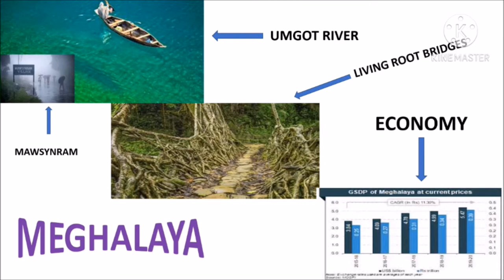Economy of Meghalaya: Turmeric produced in Meghalaya is considered to be one of the best in the world as it contains 7.5% curcumin. The state has tremendous potential for tourism. The number of tourists visiting Meghalaya increased from 8,39,363 in 2016 to 12,16,454 in 2018. Limestone production in Meghalaya grew to 7.19 million tons in fiscal year 2019.